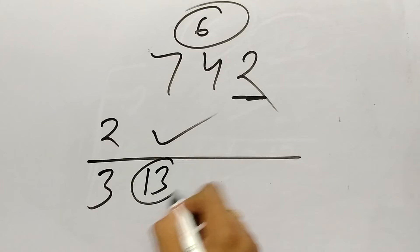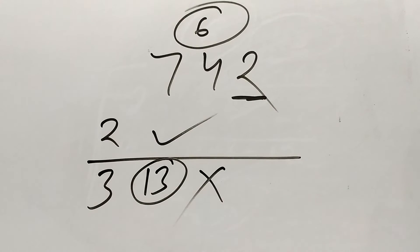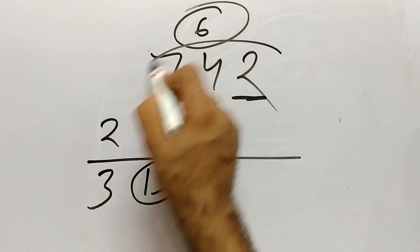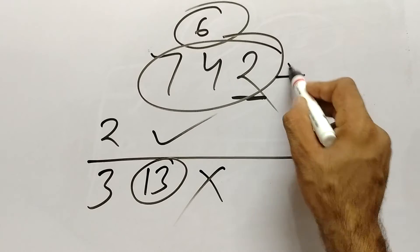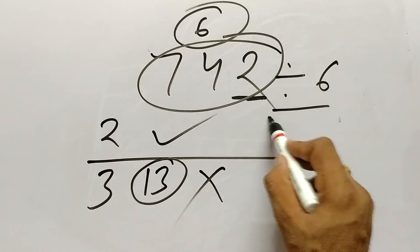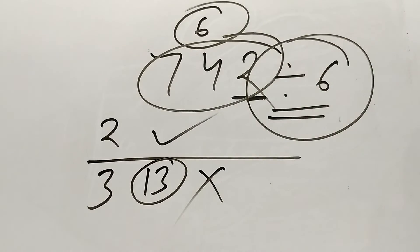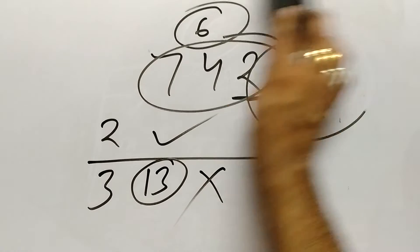So 13 kya 3 ki table mein aata hai? Nahi aata hai. So what we can say that 742 is not exactly divisible by 6. Divide to kar paenge lekin remainder aayega. I hope now you can check the divisibility for 6. Okay let's take one more example.